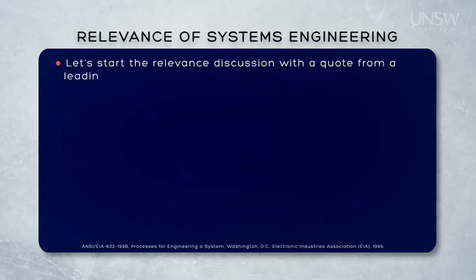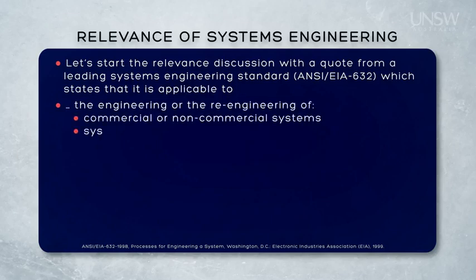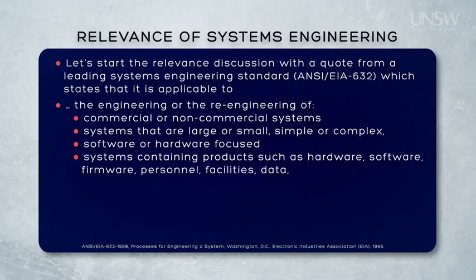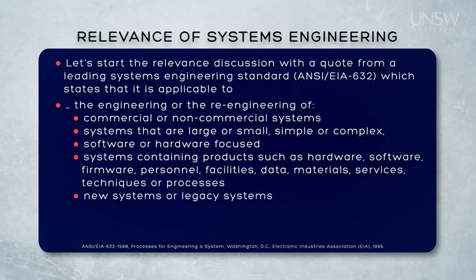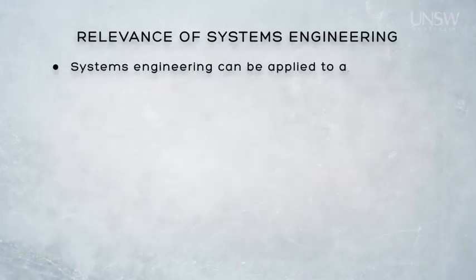For example, NCIA 632 states that the standard itself is applicable to the engineering or re-engineering of commercial or non-commercial systems, or part thereof — any system: small, large, simple, complex, software-intensive, precedented, unprecedented, systems that comprise hardware, software, firmware, personnel, facilities, and so on, new systems, and legacy systems. It's actually quite difficult to imagine a system that doesn't fit that description, so in other words, systems engineering applies to all systems.